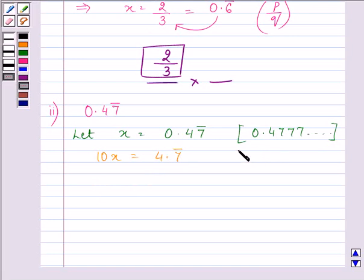Which means that the number which we have is 4.777 which goes on. Now we need to multiply x is equal to 0.47 bar with 100 also to get 100x is equal to 47.7 bar which means now we have 47.777 which goes on.